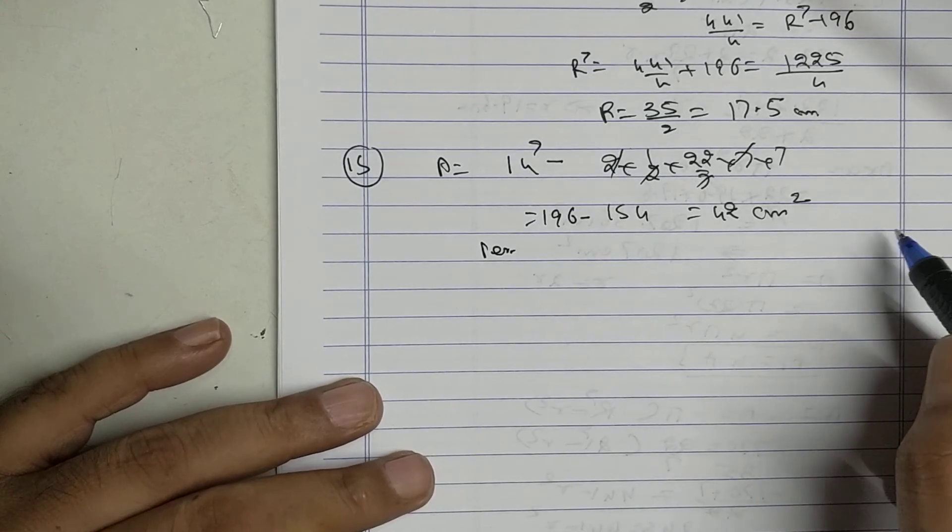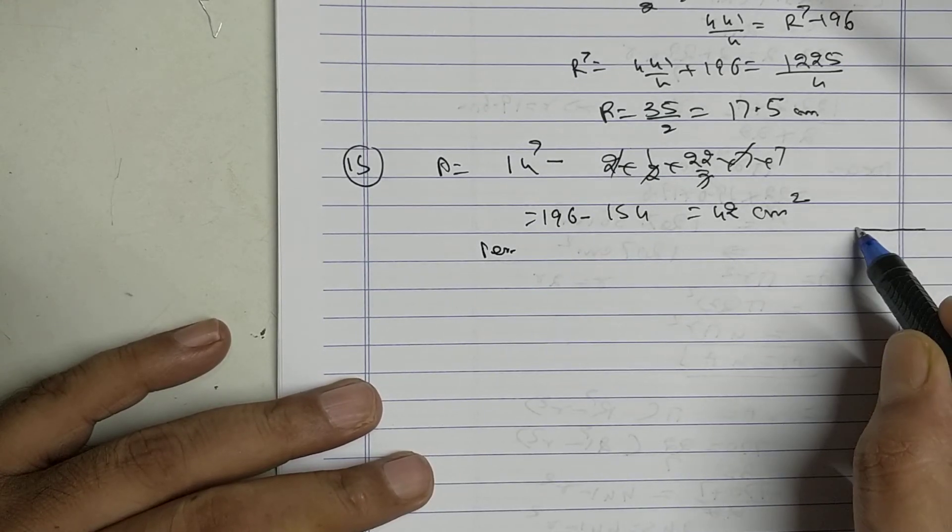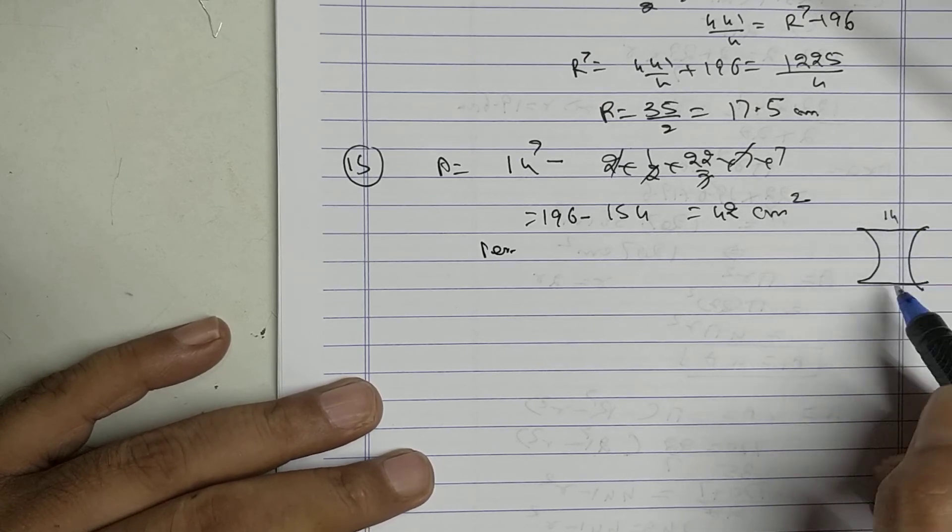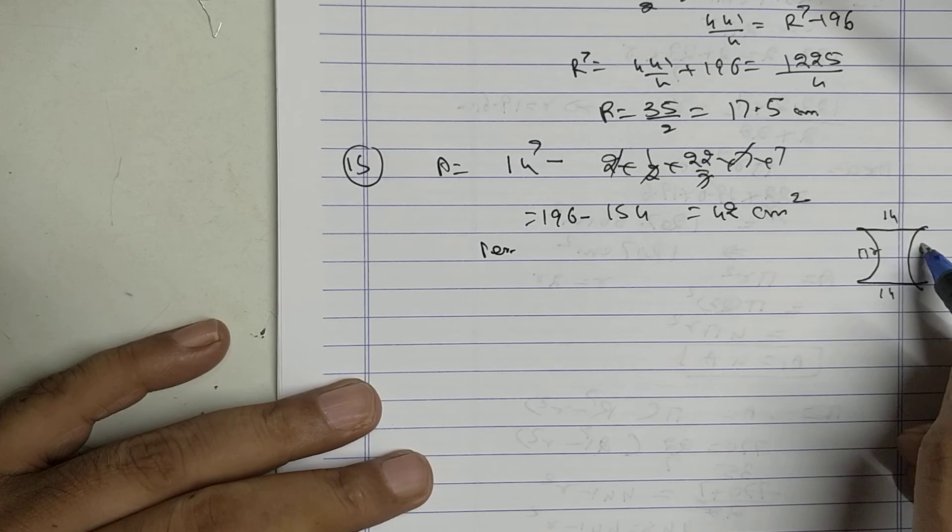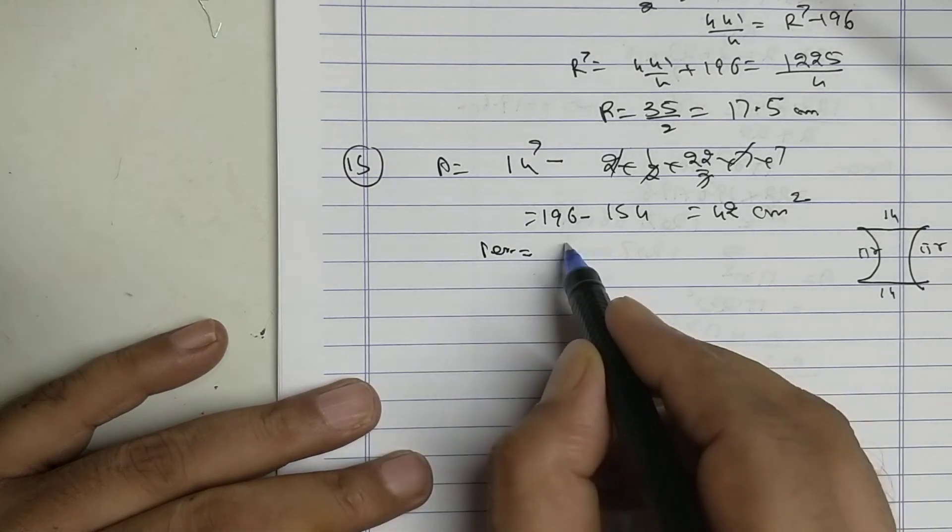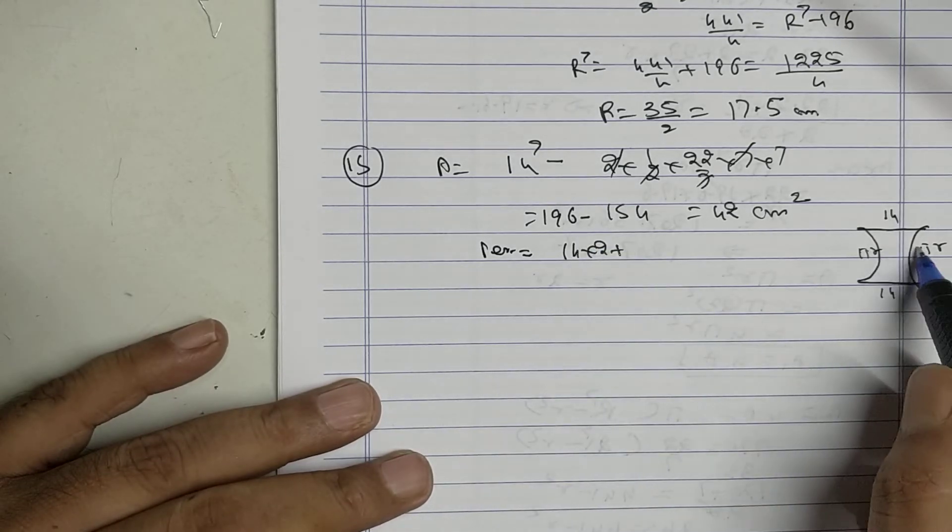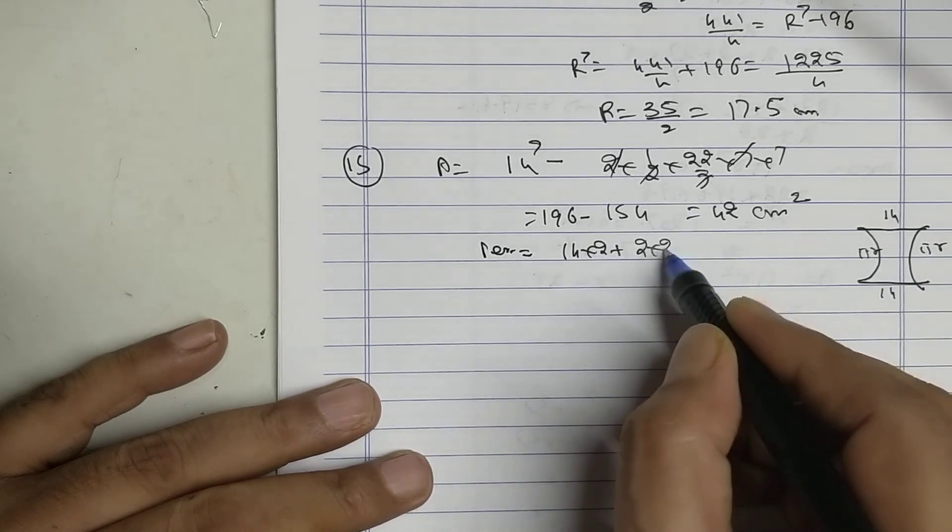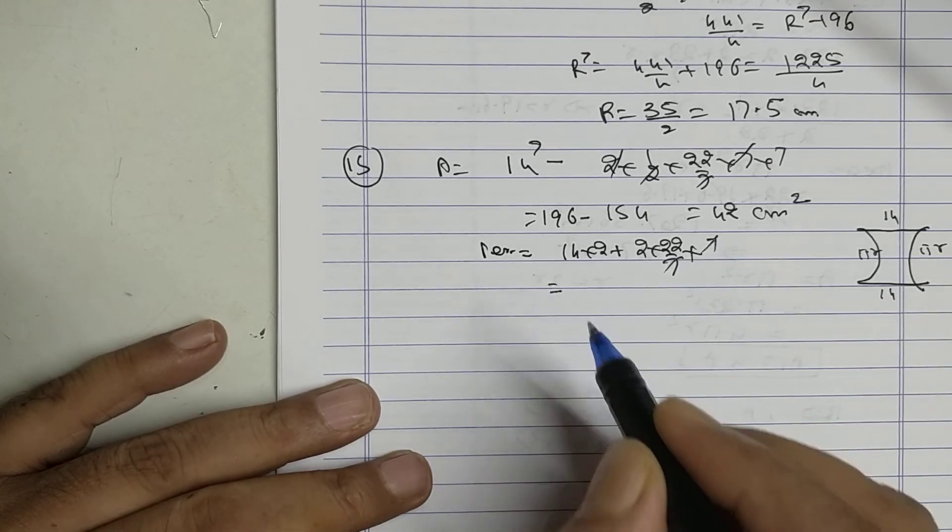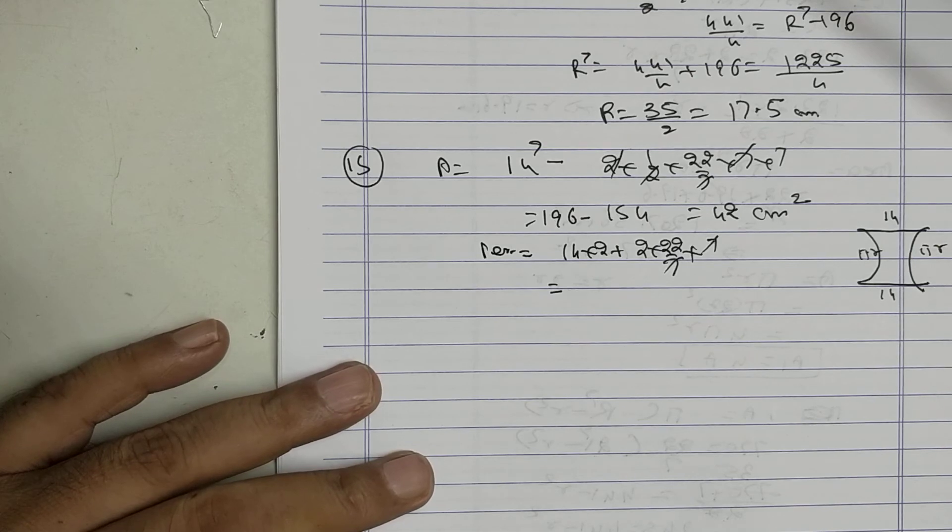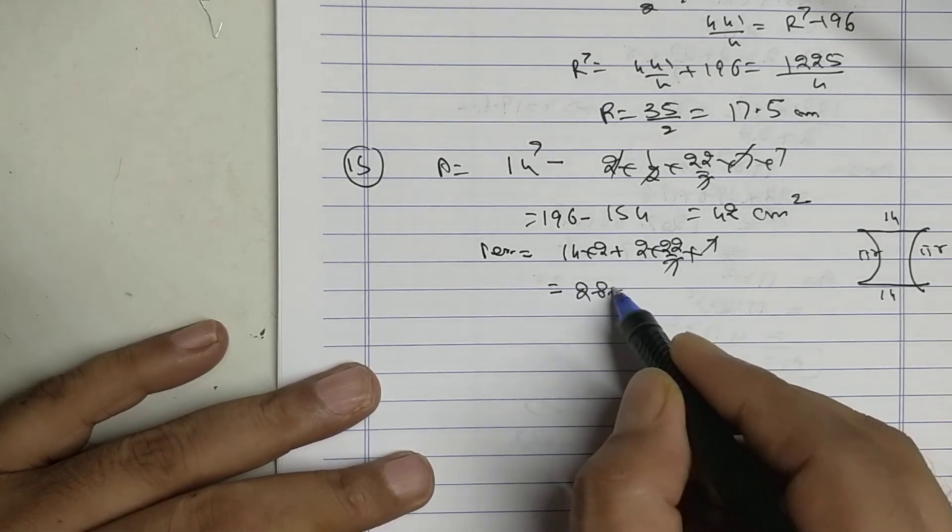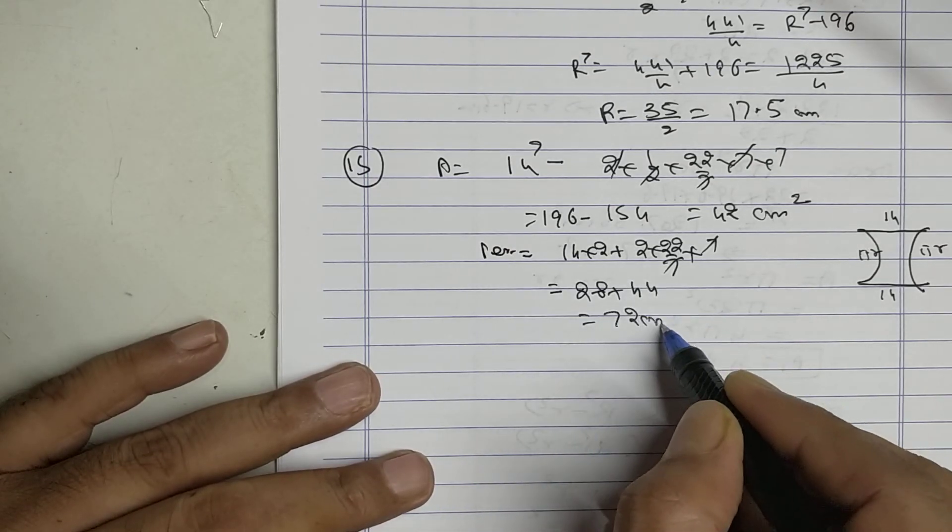Now perimeter. I will take this part, this part, this part and this part. This is 14, this is 14, this is πR, this is πR. So perimeter is 14 into 2 plus 2πR, that is 2 into 2 radius is 7. 28 plus 44, that equals 72 centimeters.